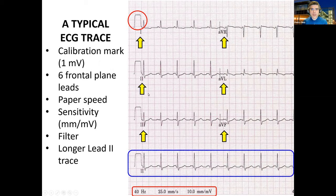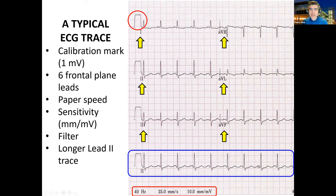Finally, depending on the equipment, you'll be able to see a longer trace for lead 2. That happens because lead 2 is the one we normally use to search for arrhythmias, so having a longer trace helps us better characterize the ECG.